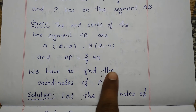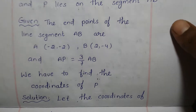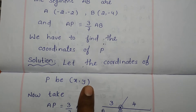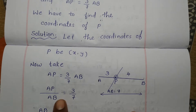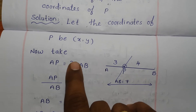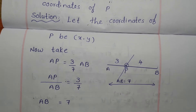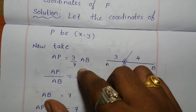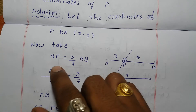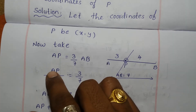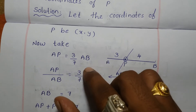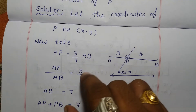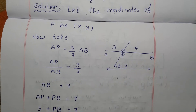Let the coordinates of P be (x, y). From the given statement AP = 3/7 of AB, we rearrange to get AP/AB = 3/7. So AP corresponds to 3 parts and AB corresponds to 7 parts.